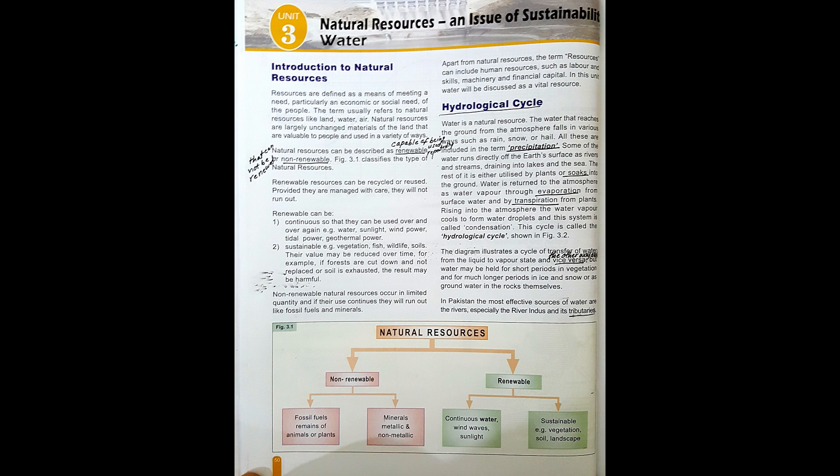This cycle is called the hydrological cycle, as shown in Figure 3.2. The hydrological cycle describes the continuous movement of water on, above and below the surface of the earth. The diagram illustrates a cycle of transfer of water from the liquid to vapor state and vice versa. Water may be held for short periods in vegetation and for much longer periods in ice, snow or as groundwater in the rocks. In Pakistan, the most effective sources of water are the rivers, especially the River Indus and its tributaries.